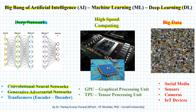There are many types of deep networks, like convolutional neural networks, generative adversarial networks, and transformers — that is, encoder and decoder networks. In high-speed computing, the important developments are the GPU (graphical processing unit) and the TPU (tensor processing unit). Big data is available because of social media, sensors, cameras, and IoT devices.